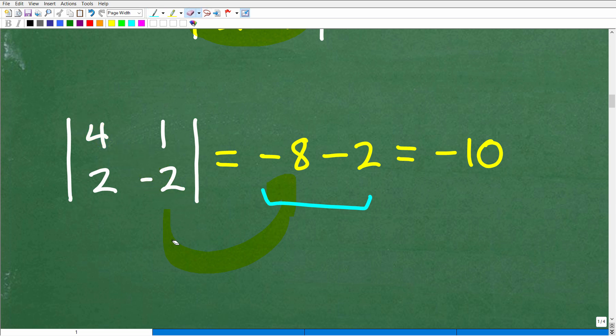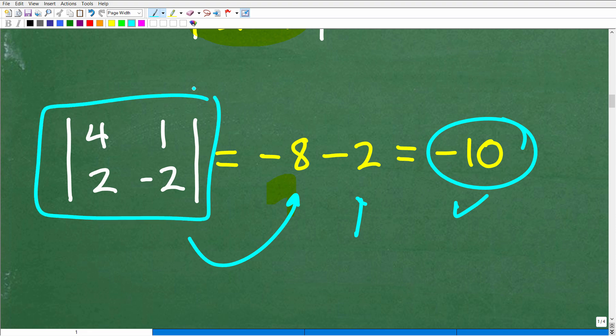...this is going to be, let me kind of show you this again, right here, negative 8, okay? Remember, it's 4 times negative 2. That's going to be negative 8 minus 2 times 1 is 2. And, of course, gives us negative 10. That is the determinant of this 2x2.